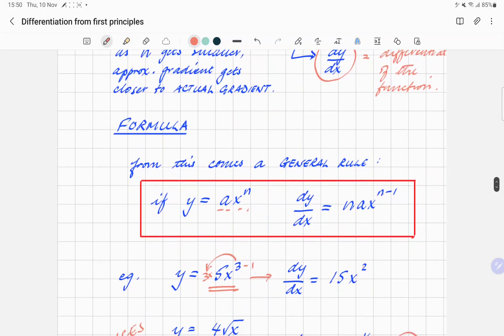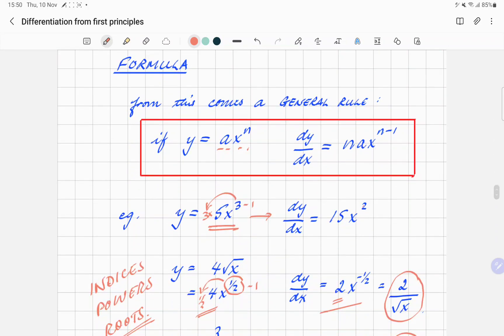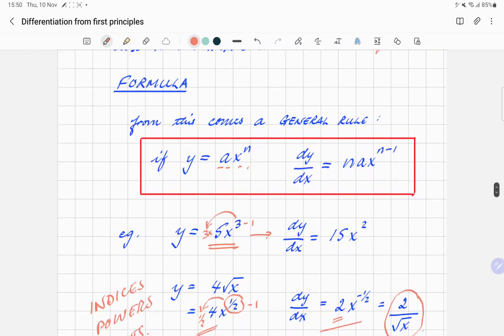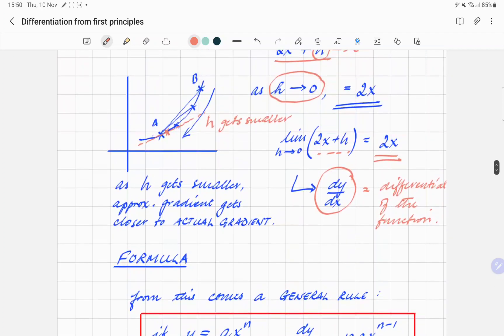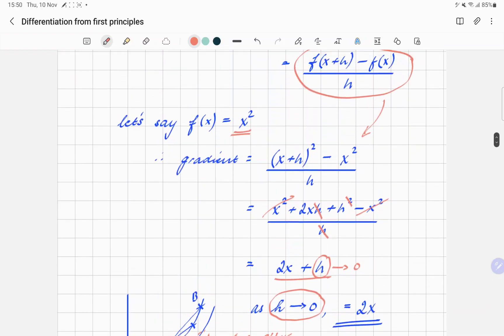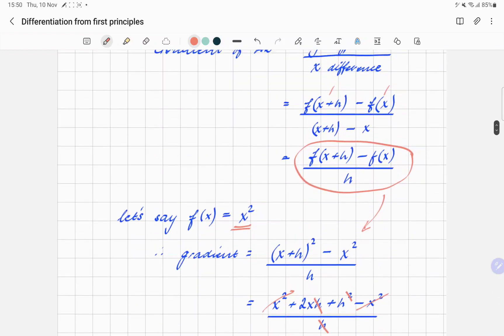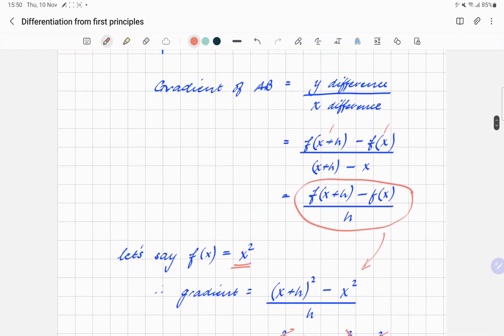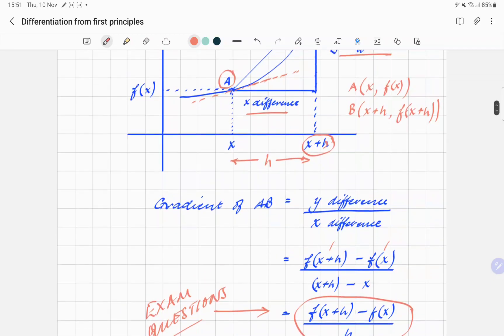So the proof of the differentiation that you might have learned, the formula which you can apply without proof, is in the explanation above. And the important thing is to make sure you use this formula here - that's the one that you need for exam questions. That really is all there is to differentiation from first principles, and there really isn't much else to it.